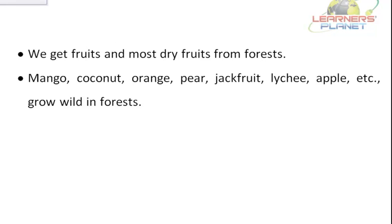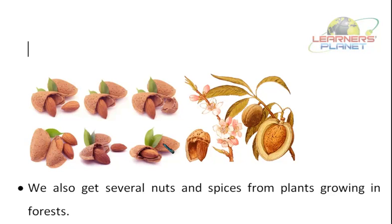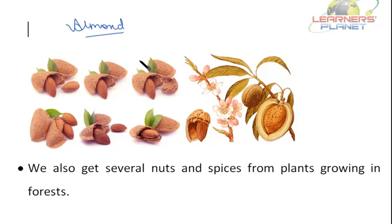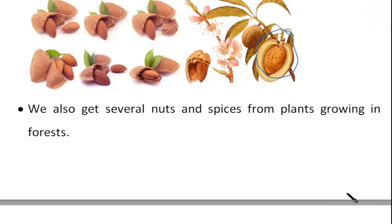Forests also provide us with fruits. We get fruits and most dry fruits from forests — mango, coconut, orange, pear, jackfruit, lychee, apple and others grow wild in forests. We also get several nuts and spices from plants growing in the forest, such as almonds.